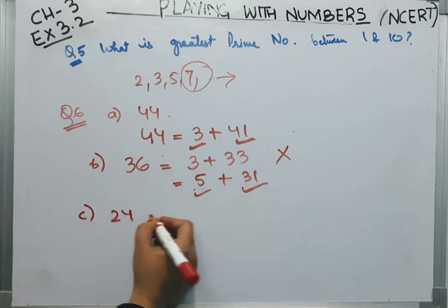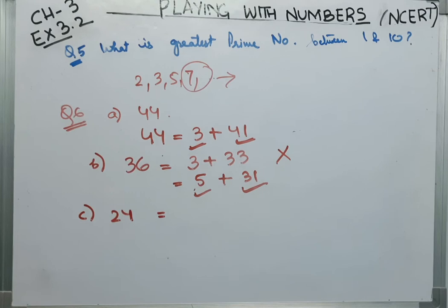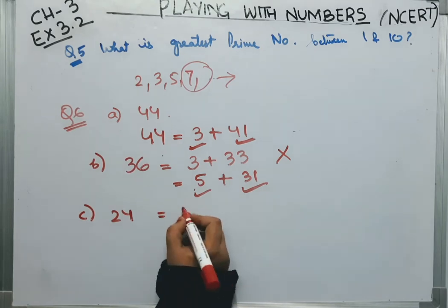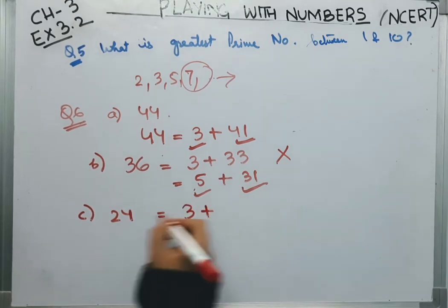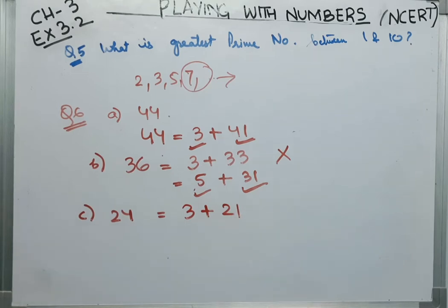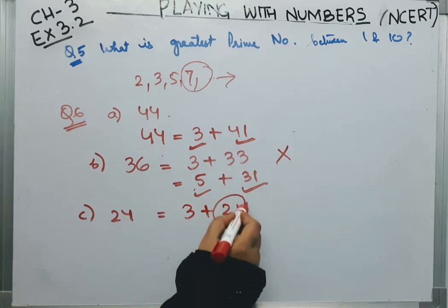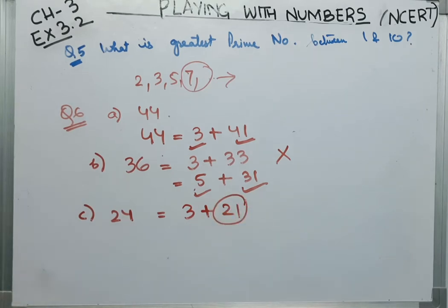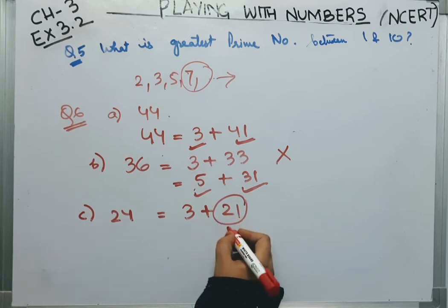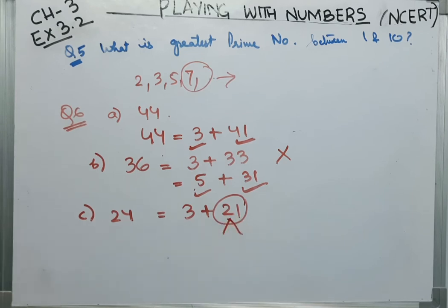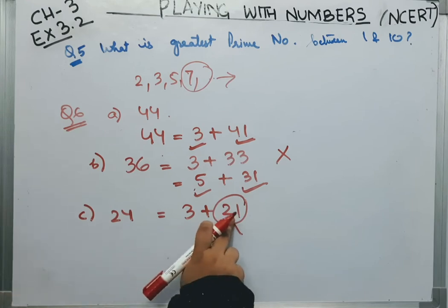Now, coming to 24. Now, 24 can be written as 3 plus 21. But 21 here is not in prime number. 21 prime number nahi hai. Kyunkih 21 3 ki table mein aata hai. 7 ki table mein aata hai. We have to split this 21.